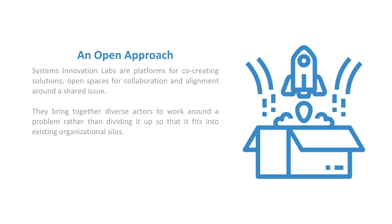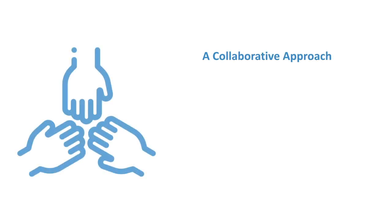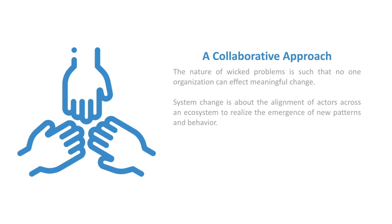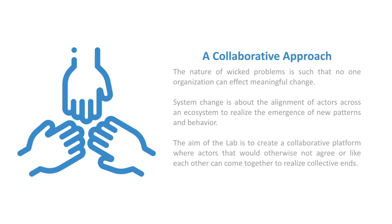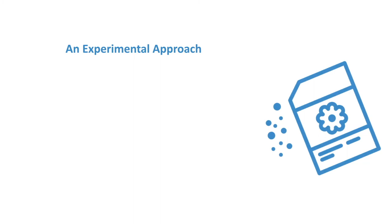We have to bring people together around the issue where it is. These labs are not inside any organization removed from the problem but are typically embedded within the local context where the issue is being experienced. The nature of wicked problems is such that no one organization can affect meaningful change. Systems change is about the alignment of actors within an ecosystem to realize the emergence of new patterns and behavior. The aim of the lab is to create a collaborative platform where actors that would otherwise not agree can come together to realize collective ends.